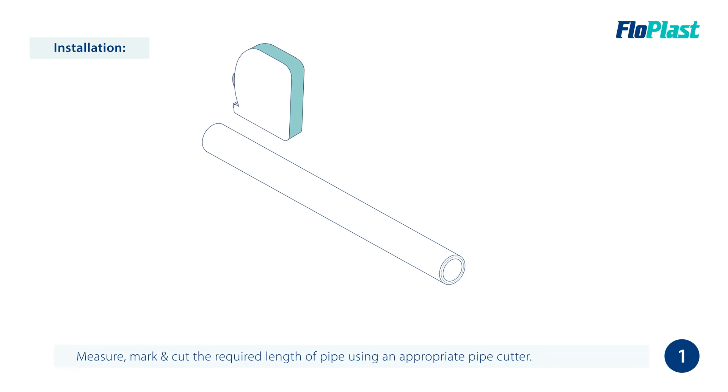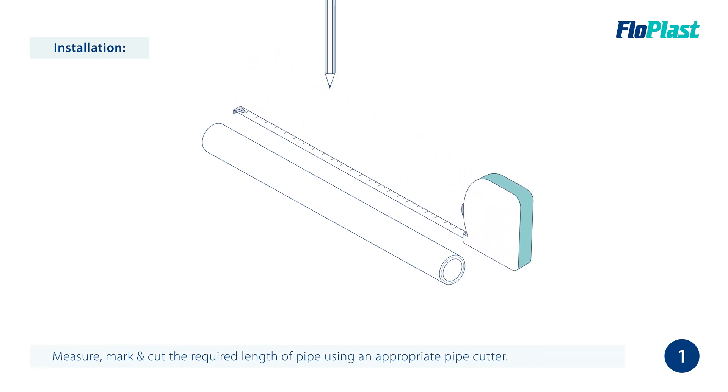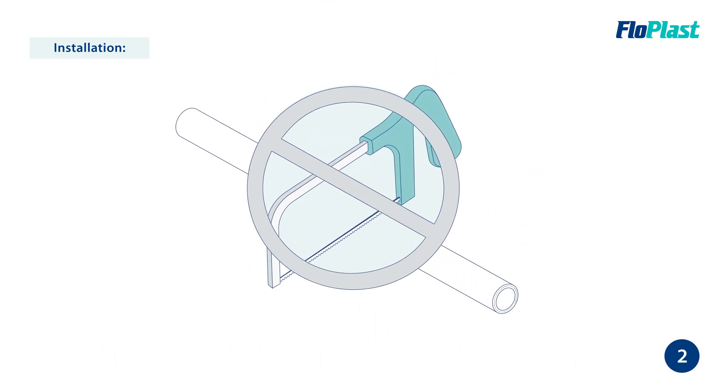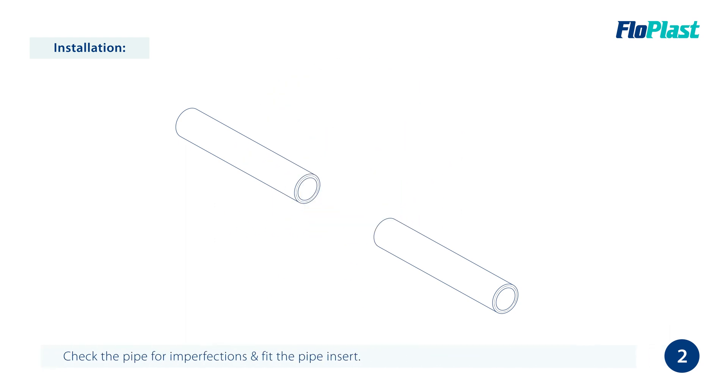To install the product, the first thing you need to do is measure and mark the required length of pipe. Once marked, cut the pipe using an appropriate pipe cutter. It is important not to use a hacksaw for this task. To ensure a good fitting, make sure to check the cut pipe is free from imperfections.